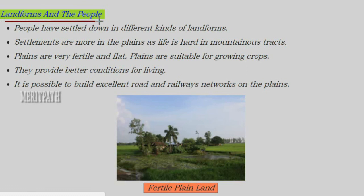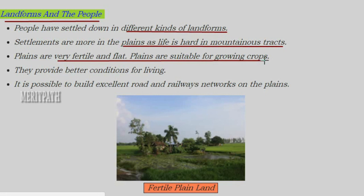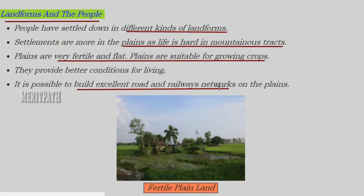Now we have studied different types of landforms — mountains, plateaus and plains — and how people relate to them. People live in all types of landforms, but settlement is more concentrated in plains because transportation is easy and life is easier compared to mountain areas, where going to school, traveling and getting groceries is more difficult. Plains are fertile, suitable for cultivation, and provide excellent conditions for building roads and railway networks.